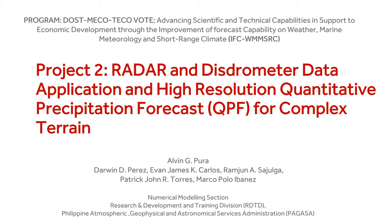Good morning. My name is Alvin Pura from DOST PAGASA, and for today I will be presenting some brief information about the second project of the DOST MECOTECO VOTE program. This project is entitled: The Radar and Distrometry Data Application in High Resolution Quantitative Precipitation Forecast for Complex Terrain.